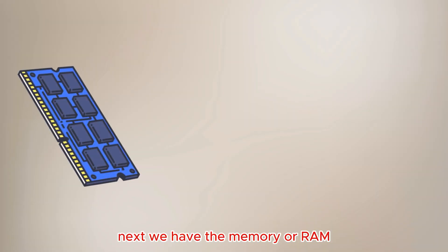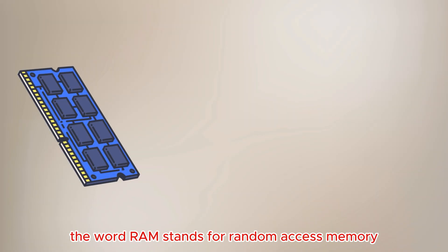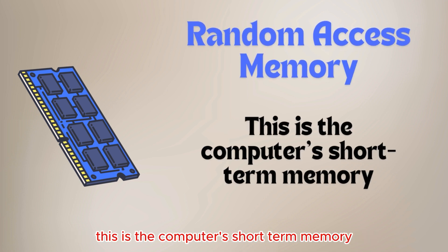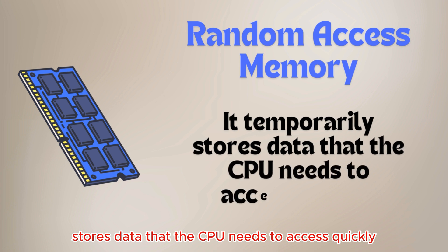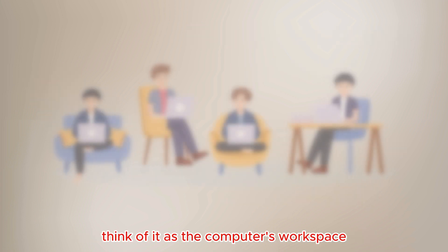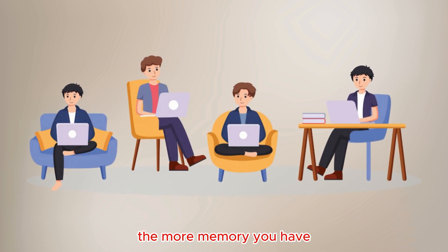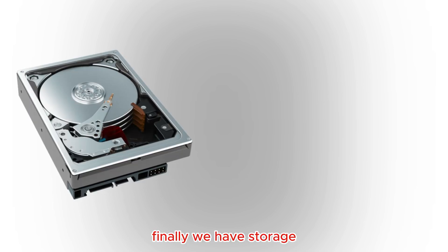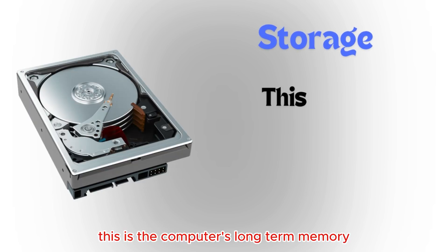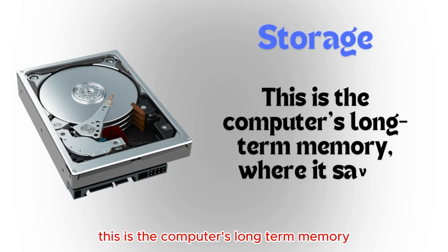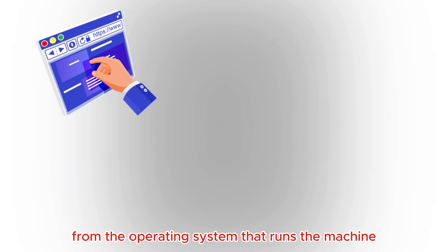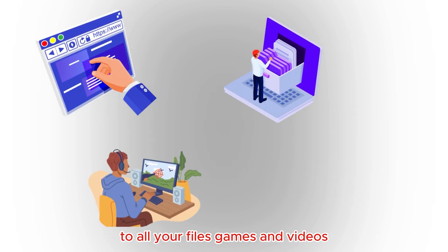Next, we have the memory, or RAM. The word RAM stands for random access memory. This is the computer's short-term memory. It temporarily stores data that the CPU needs to access quickly. Think of it as the computer's workspace. The more memory you have, the more tasks your computer can handle at once. Finally, we have storage. This is the computer's long-term memory, where it saves everything — from the operating system that runs the machine to all your files, games, and videos.